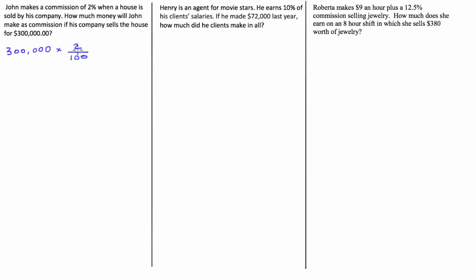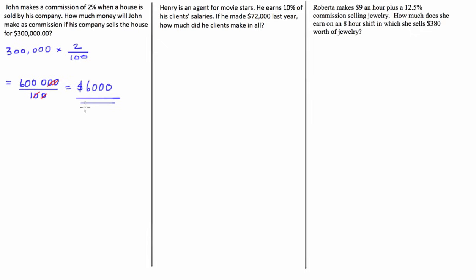So we have $300,000 times 2%, which can be written as 300,000 times 2 over 100. We can write 300,000 times 2, which is 600,000, divided by 100. The two zeros cancel out, and what we have remaining is 6,000 over 1, or simply $6,000.